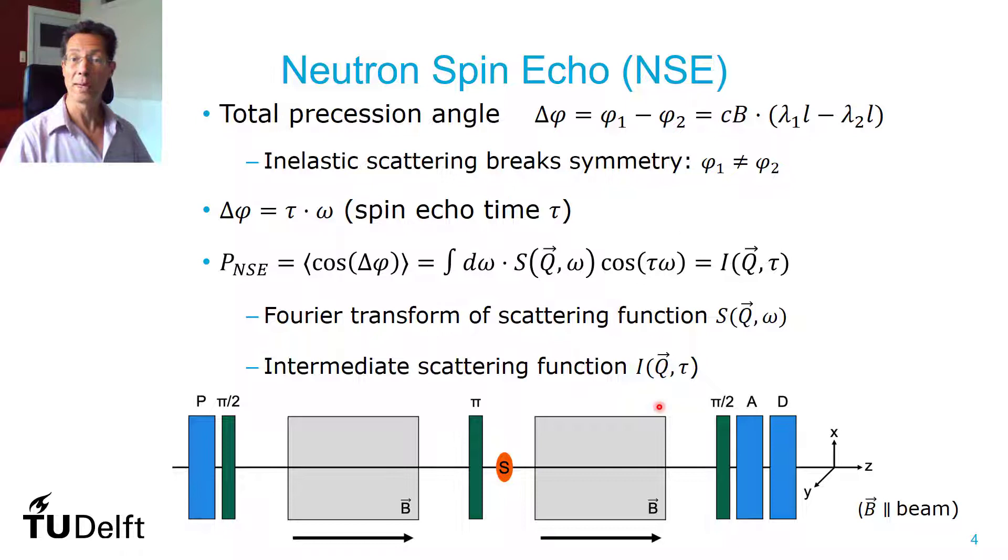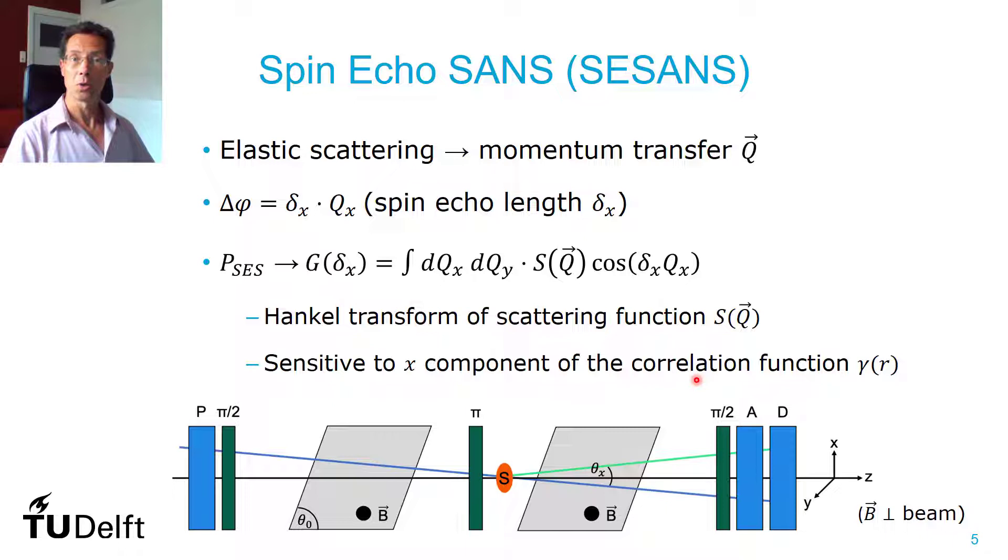Now, with normal SESANS as we know, there are all kinds of variations on how to realize it. But in principle, they have precession regions with tilted interfaces. There's always a gradient in the precession as a function of height in one direction. And what you measure in this case, if you have a direct beam, then the precession here will always be equal to precession there.